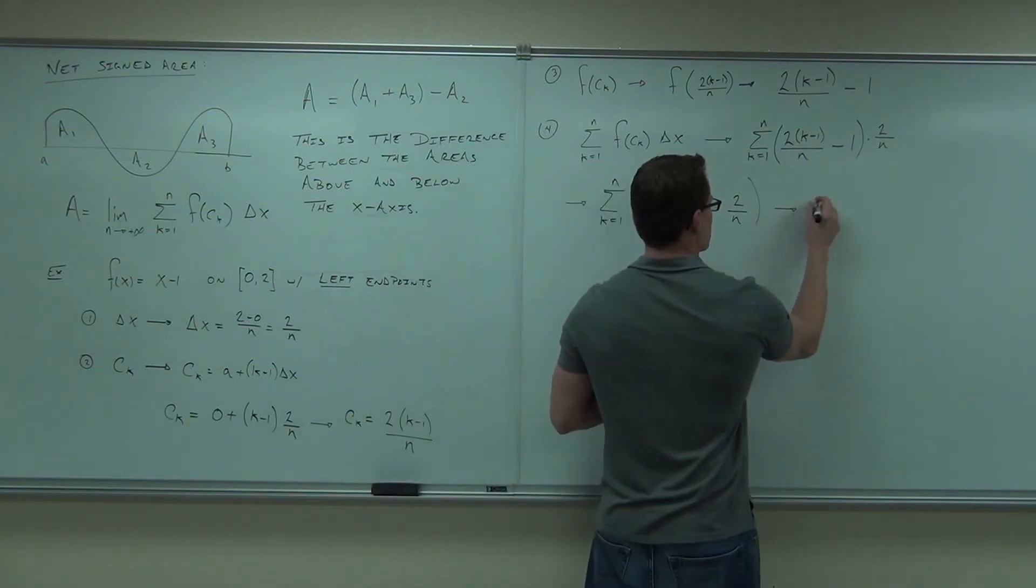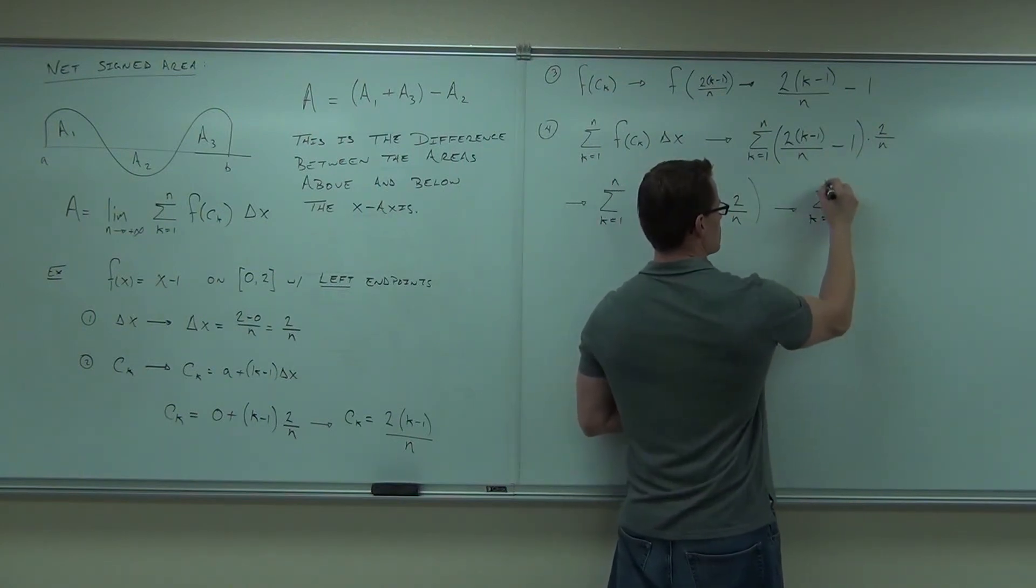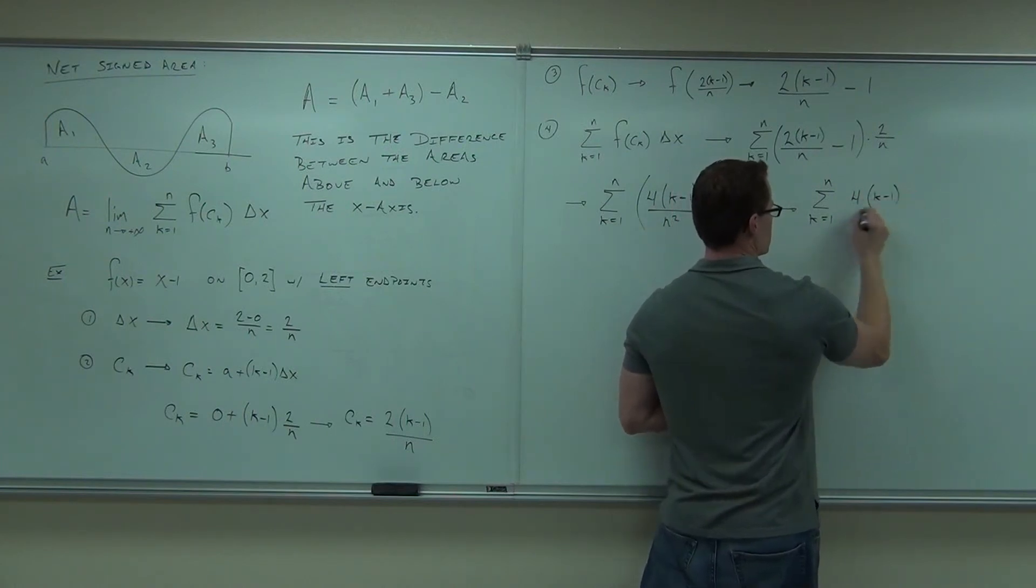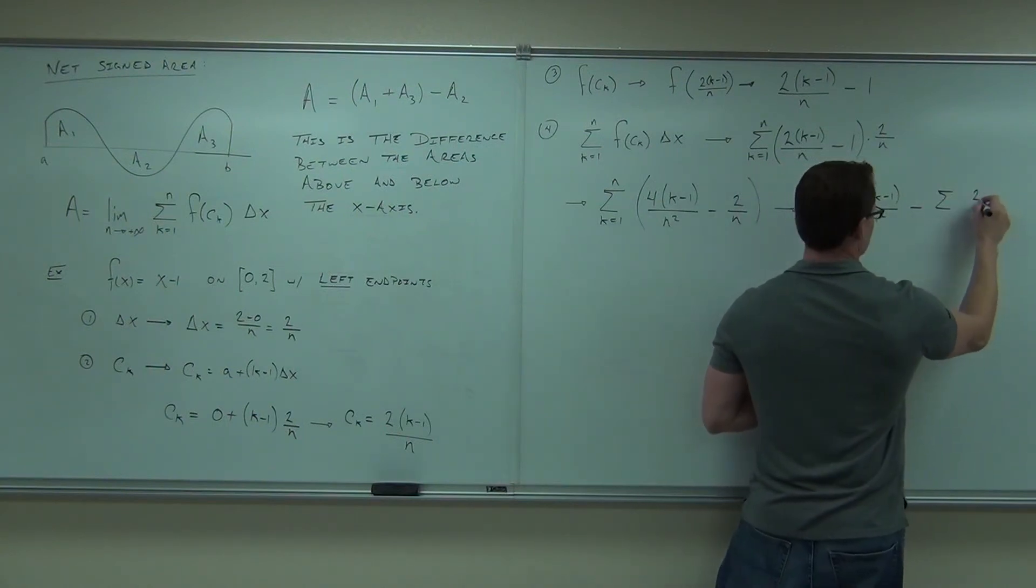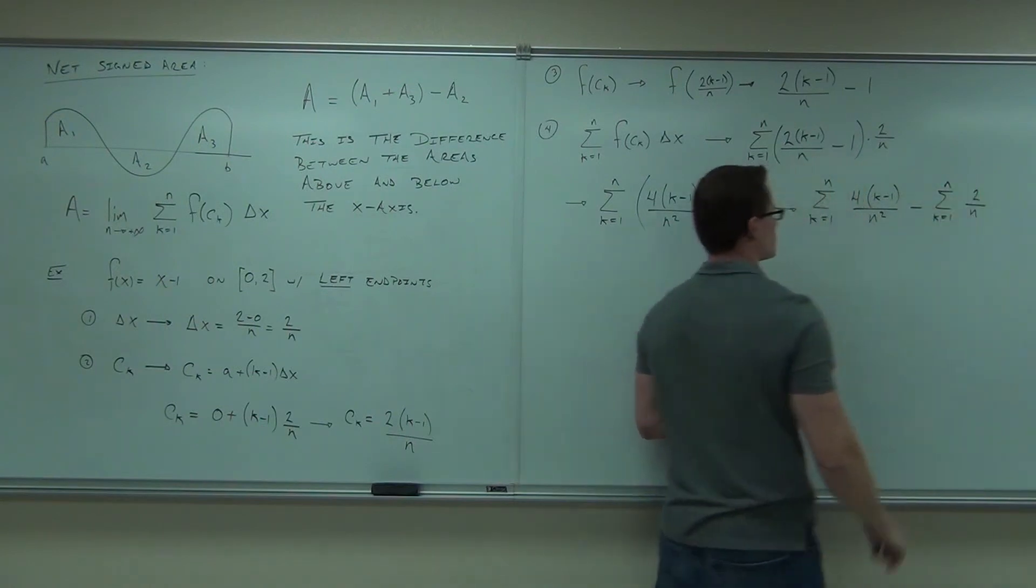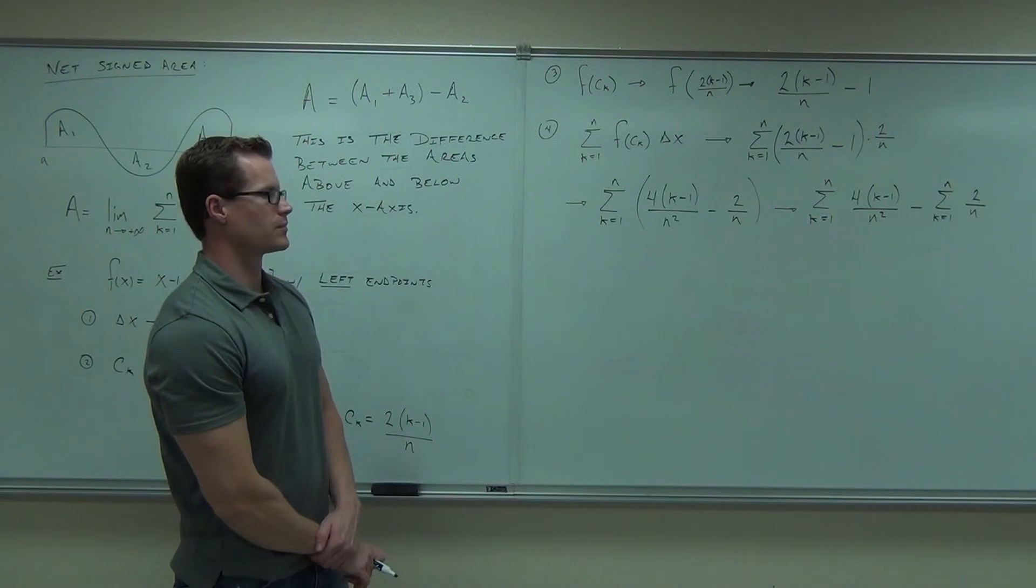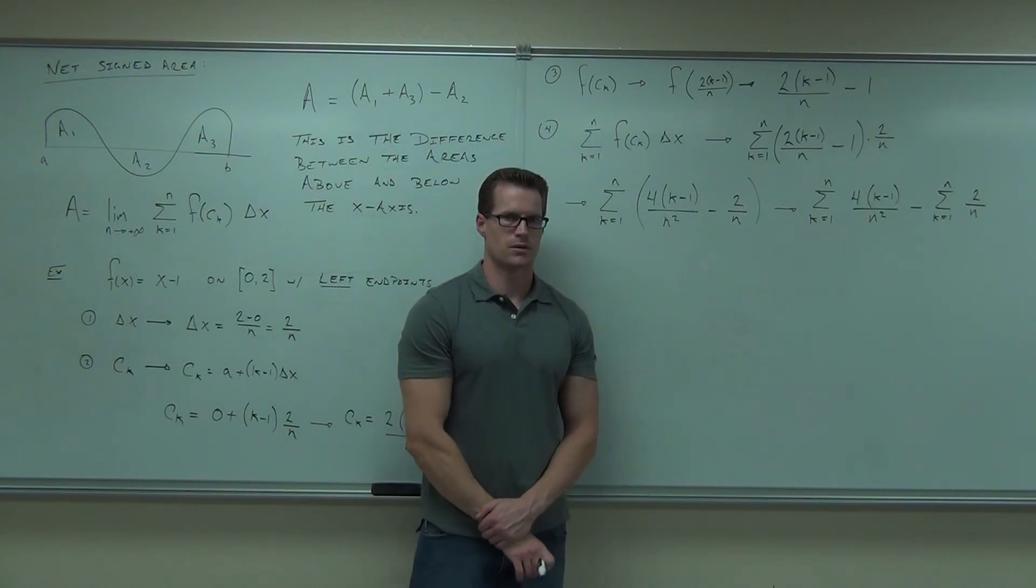So here you go, okay, summation notation k equals 1 to n. This minus this. Are you still okay so far? Are you sure?